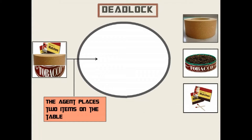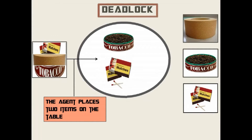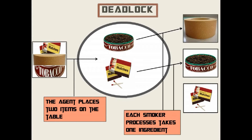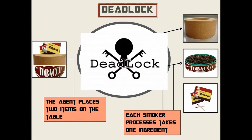This is the demonstration of the deadlock state. The agent places two items on the table at random — in this example, tobacco and matches. Each item is taken by one smoker: tobacco is taken by the paper smoker, and matches is taken by the tobacco smoker. This results in the deadlock state because it leaves the smoker with paper unable to make a cigarette.